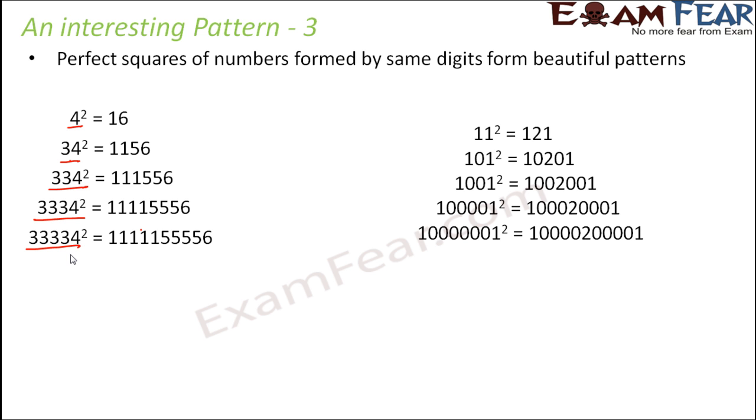Let us look at one more pattern here. 11² = 121, 101² = 10201, 1001² = 1002001. As the number of zeros between the two ones is increasing on the left hand side, the number of zeros on the right hand side are also increasing. It's very amazing to see that these are real calculations and with numbers you have such beautiful things existing.